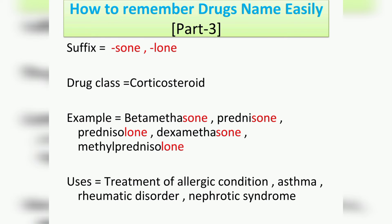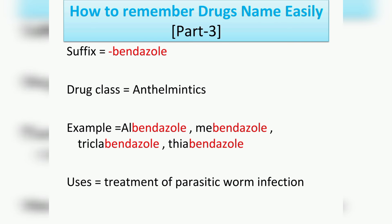The next suffix is '-sone' or '-lone', which represents the drug class corticosteroids. Examples include betamethasone, prednisone, prednisolone, dexamethasone, and methylprednisolone. Their usage includes treatment of allergic conditions, asthma, rheumatic disorders, and nephrotic syndrome.